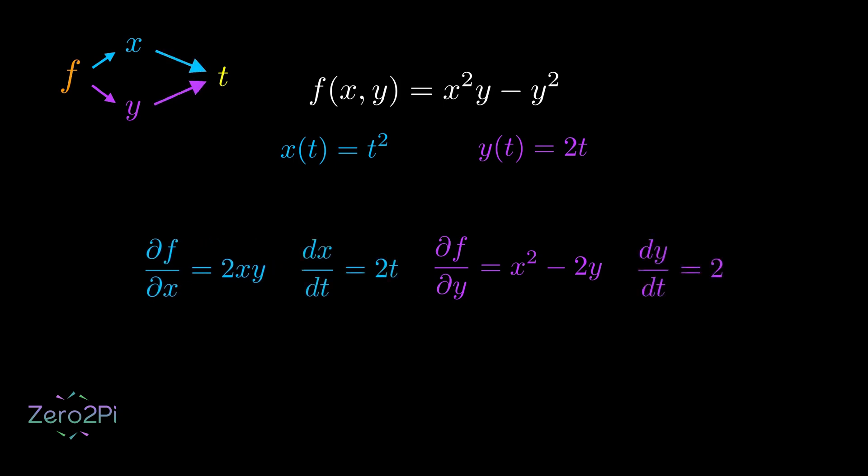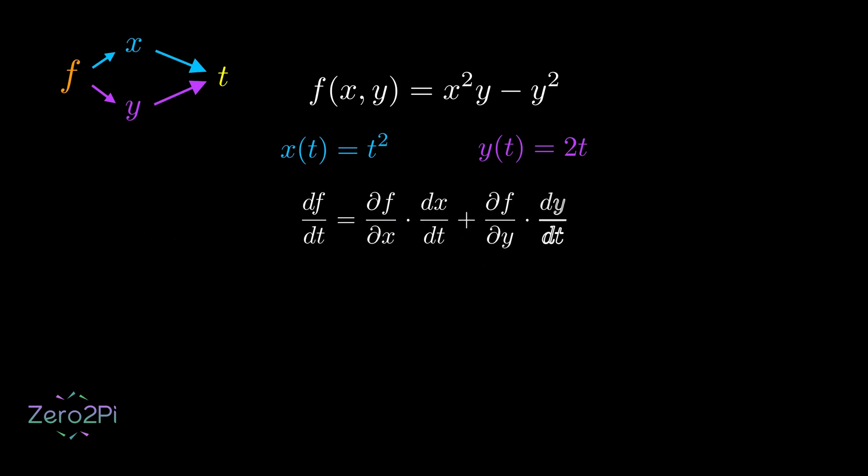Now, we just plug everything into our chain rule formula. After substituting x and y back in and simplifying, we get our final answer, 10t⁴ minus 8t. This tells us the total instantaneous rate of change of our function f as t changes.